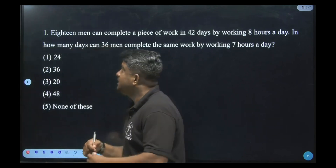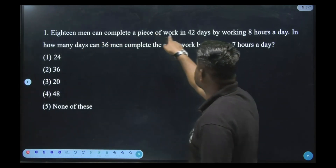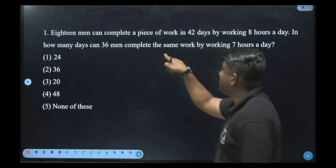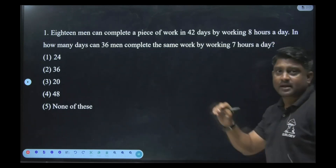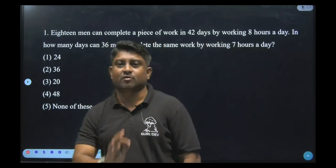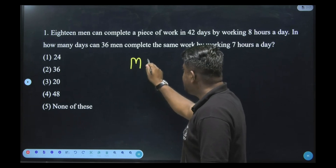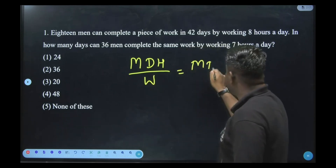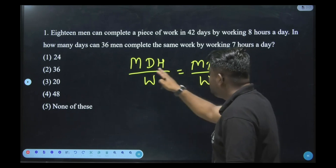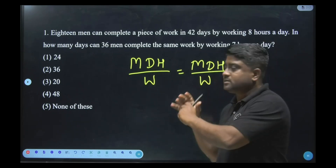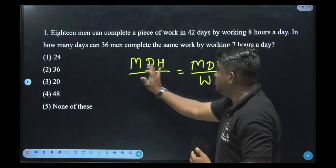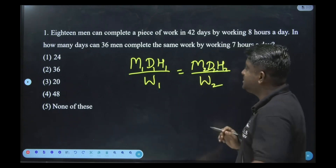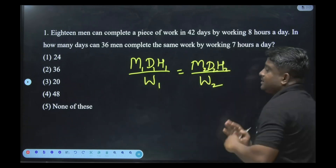Let us start with the first question. 18 men can complete a piece of work in 42 days by working 8 hours a day. In how many days can 36 men complete the same work by working 7 hours a day? This question is based on the formula: M₁D₁H₁/W₁ = M₂D₂H₂/W₂, where LHS represents group 1 and RHS represents group 2. Whatever work is done by group 1 equals the work done by group 2.